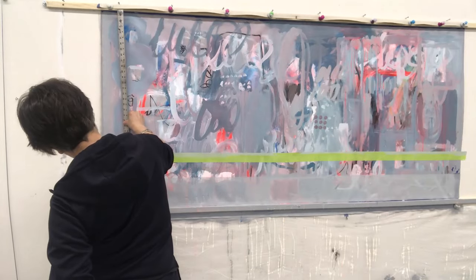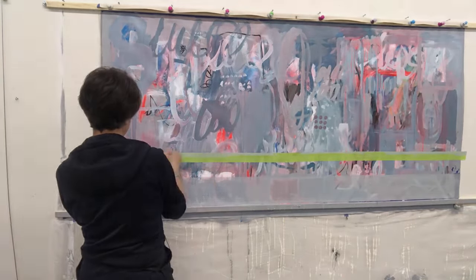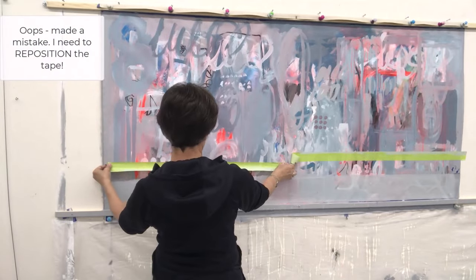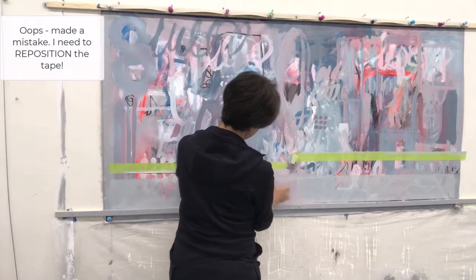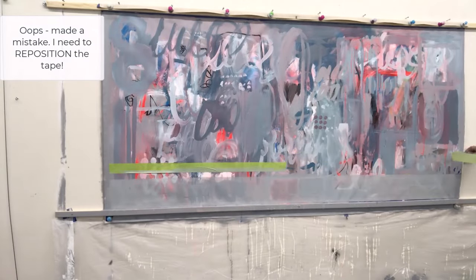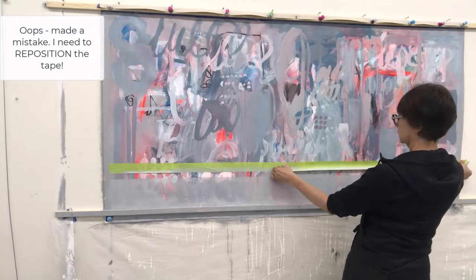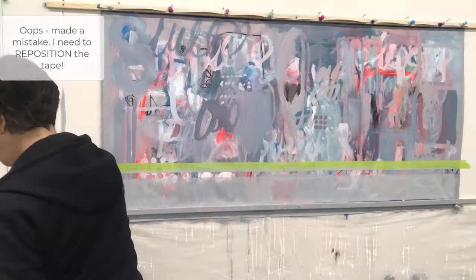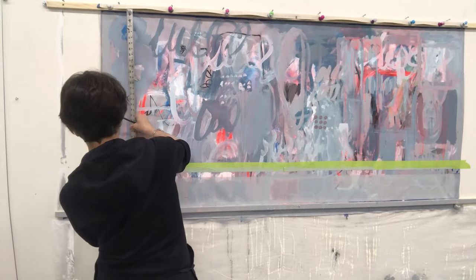I often use this green painter's tape because it's more sticky than the blue. But if you go over the edge of your tape with the gloss medium, then you really don't have to worry too much about how sticky it is. Putting that gloss medium over the edge is really going to help you a lot to get a crisp edge.